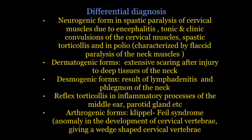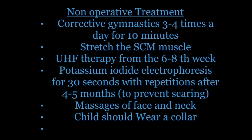Finally, arthrogenic forms — for example, in Klippel-Feil syndrome, where there is an anomaly in the development of cervical vertebrae giving wedge-shaped cervical vertebrae. As far as treatments, there is non-operative treatment as well as operative treatment.